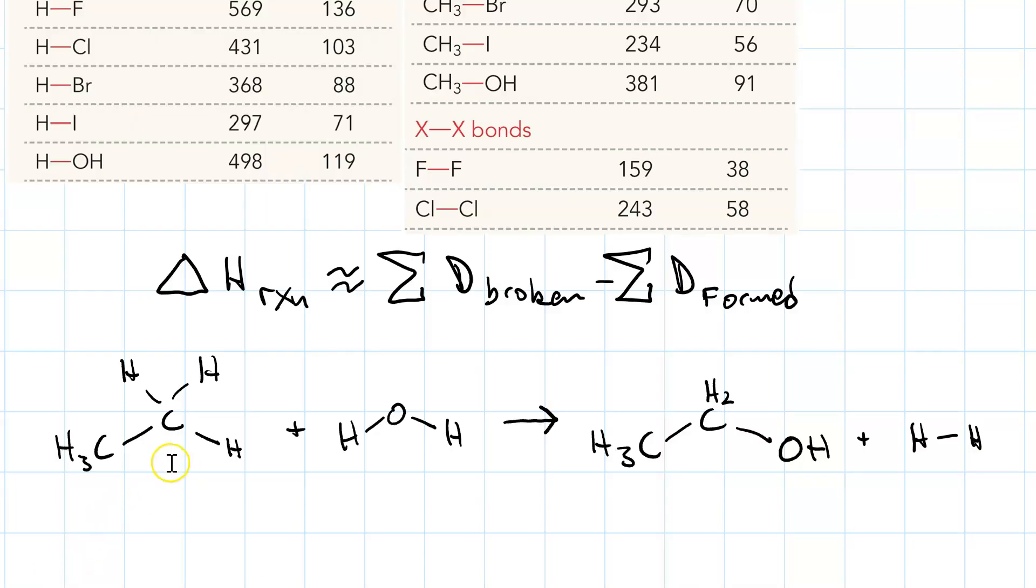Say we want to estimate the ΔH for this reaction where we react ethane with water to make ethanol and hydrogen. We want to look for the bonds that are broken and the bonds that are formed. Broken ones we'll find on the reactant side, formed ones on the product side.